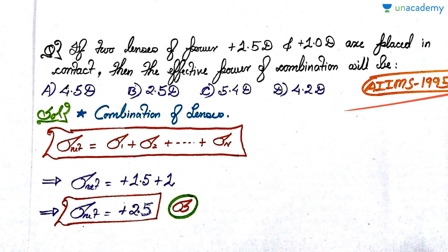Now let's see a very simple question from AIIMS 1995: If two lenses of power 1.5 diopters and 1.0 diopters are placed in contact, then the effective power of combination will be? Extremely simple question. I hope you can do it orally. As usual, pause the video, attempt the question, and then we'll discuss the solution.